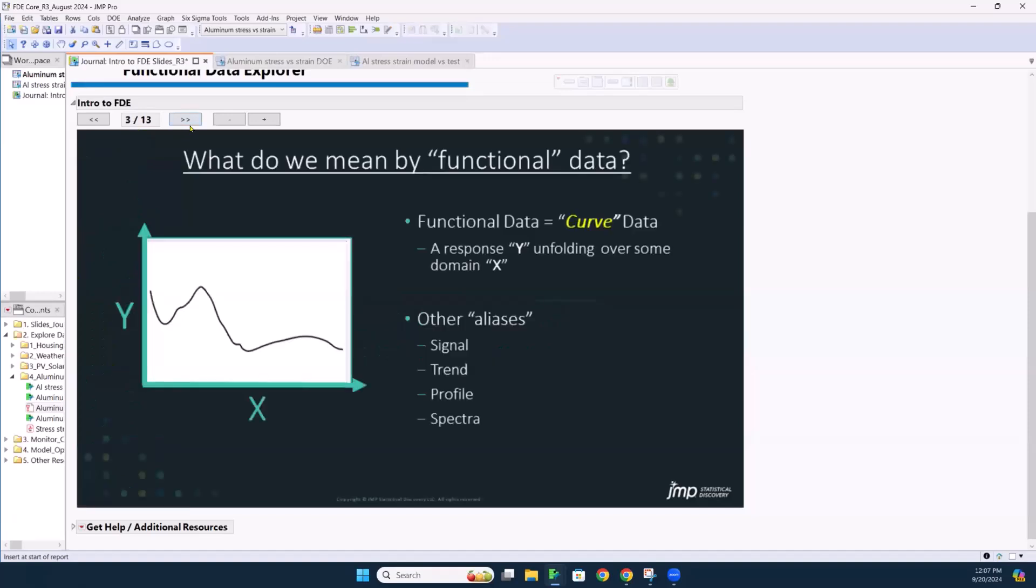So let's start off by defining what do we mean by functional data in the title of Functional Data Explorer. Really, I think of it as just a curve. Pick a Y response here that unfolds over some domain X. And some folks were listing those in the chat, titer over time, spectral temperature profiles, some other alias terms when I hear people speak, I start thinking about curved data: signal, trend, profile, and spectra. So at its heart, this is just what we mean, a Y response unfolding over an X domain.